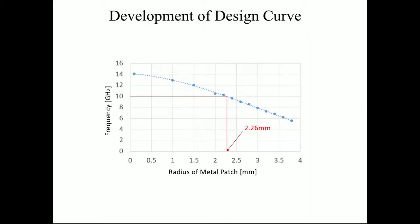And in the further development of our design curve, which we have our radius of metal patch and then we have our gigahertz. To achieve 10 gigahertz, that we designed the absorber to take in, as it shows in the graph, we need 2.26 millimeter in our metal patch to achieve 10 gigahertz.